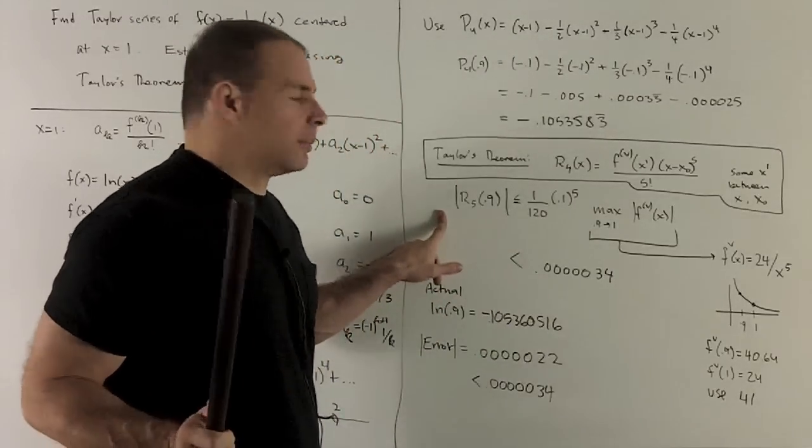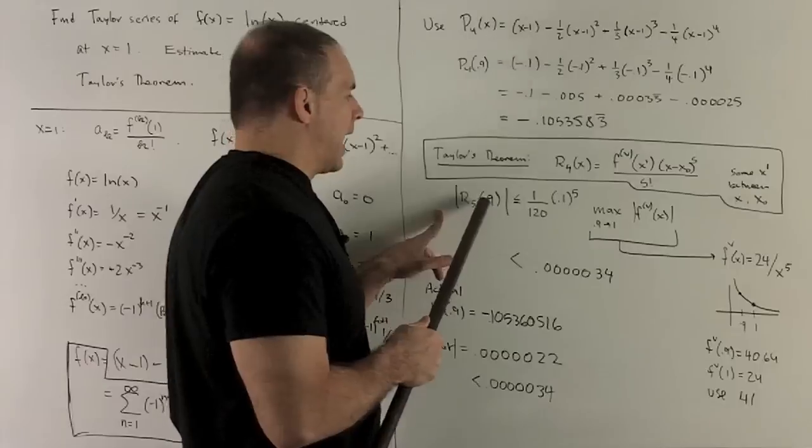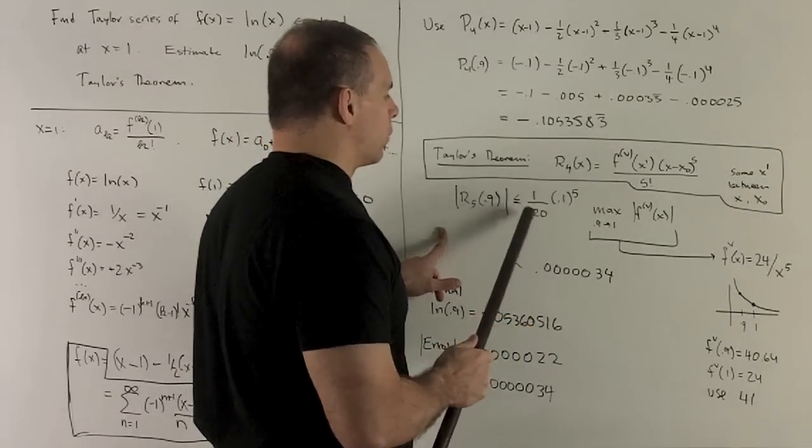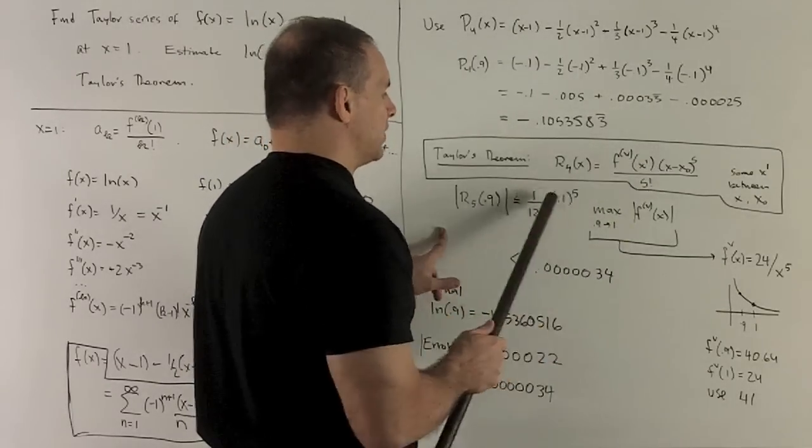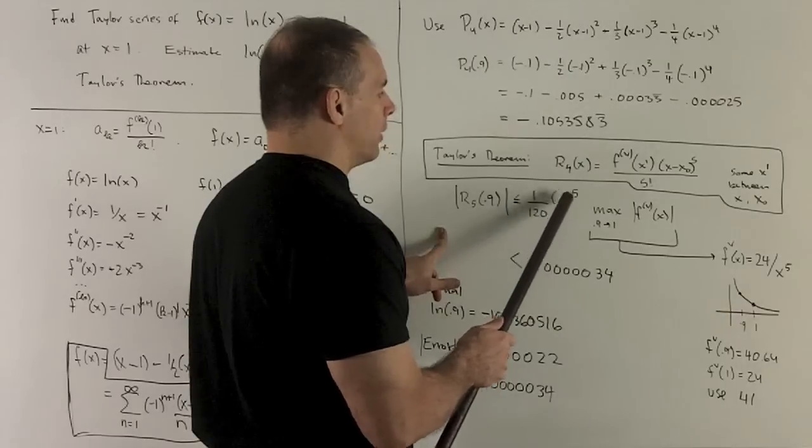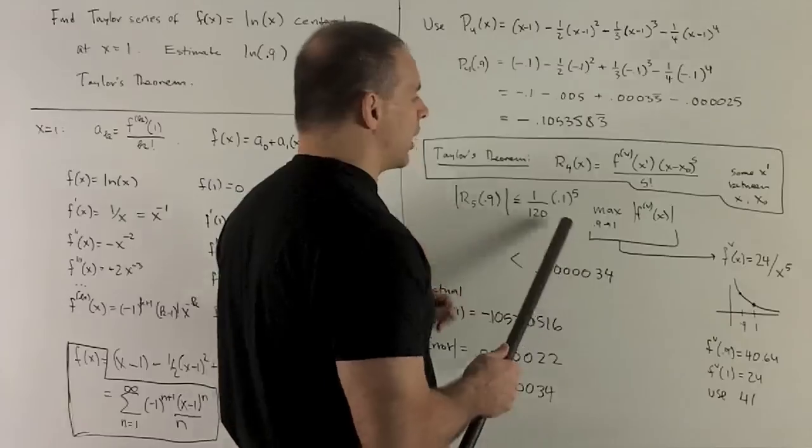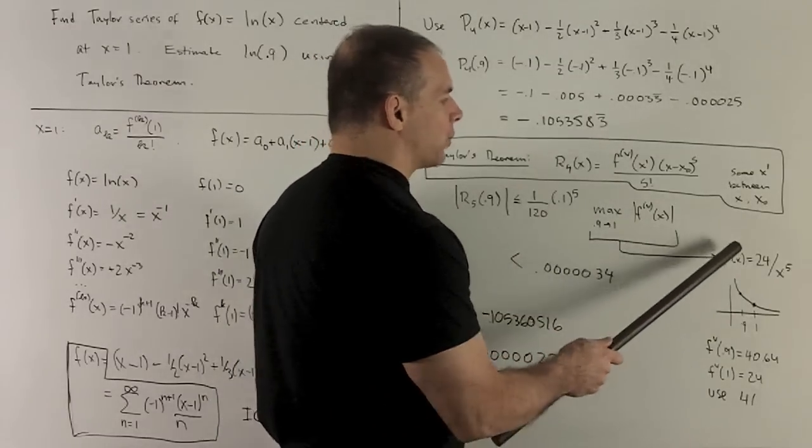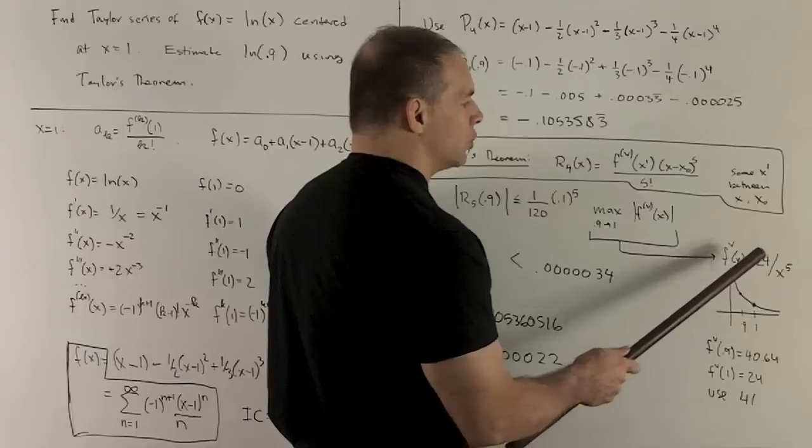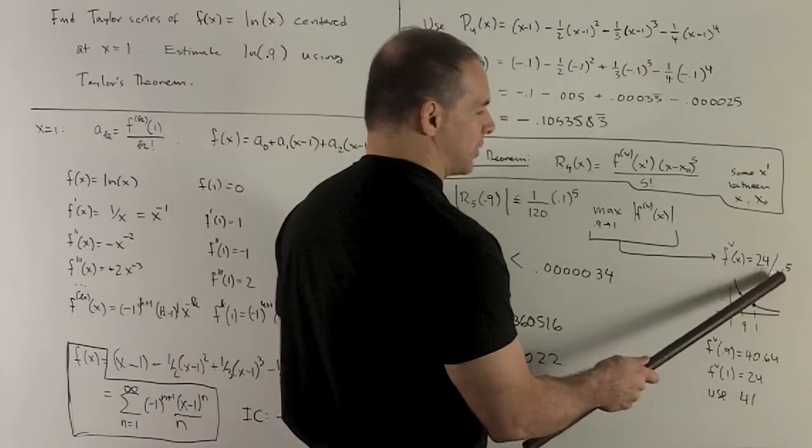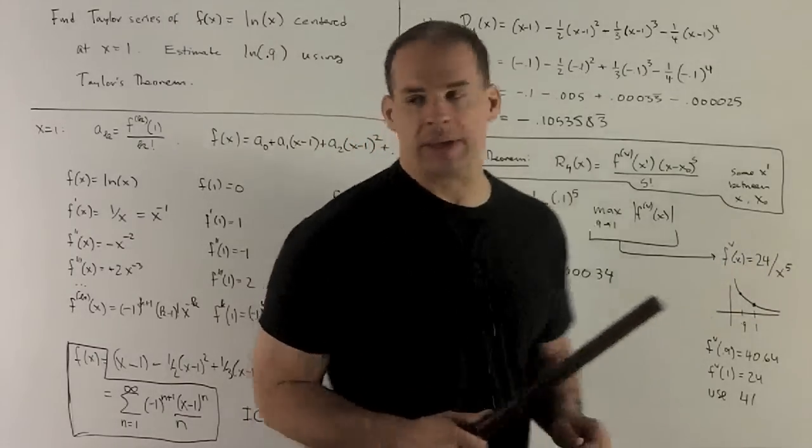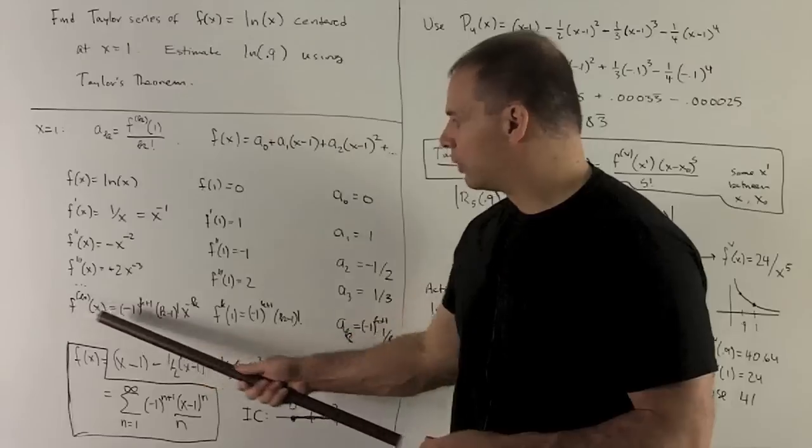Our x is going to be 0.9. 5 factorial is 1 over 120. We're going to raise this thing a minus 0.1 to the fifth power, but since I have the absolute value on the minus sign goes away, and all I got to do is check this maximum. So the fifth derivative is going to be given by 24 over x raised to the fifth power, and so we get that from our general formula right here.